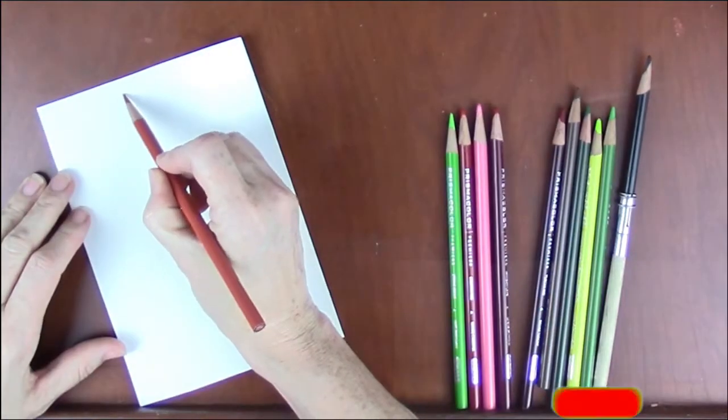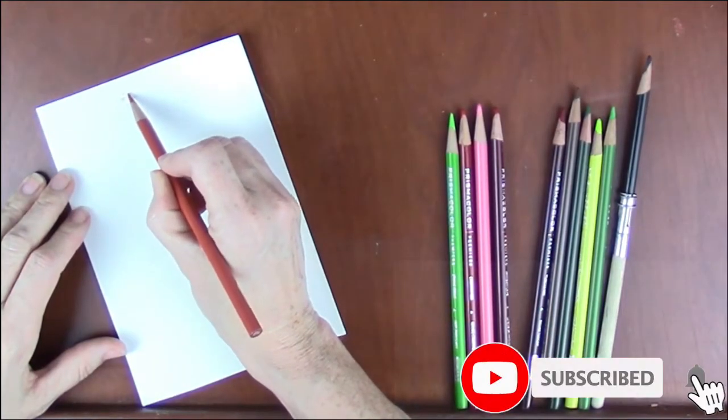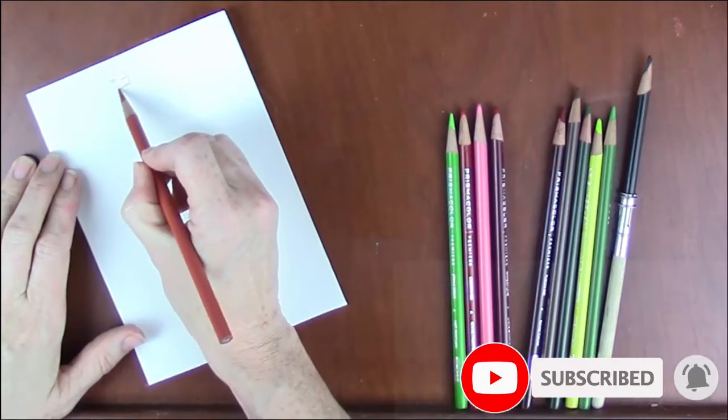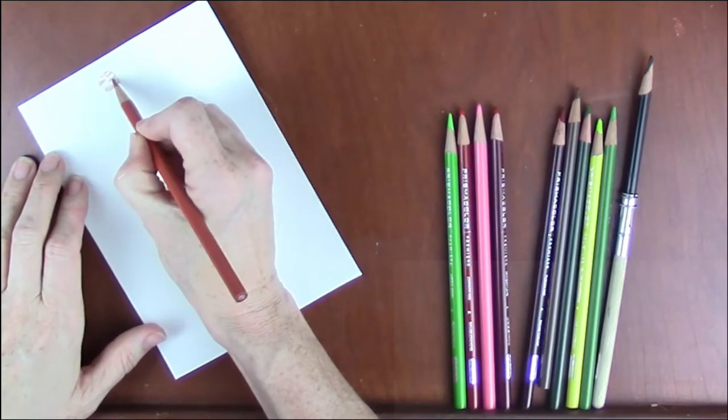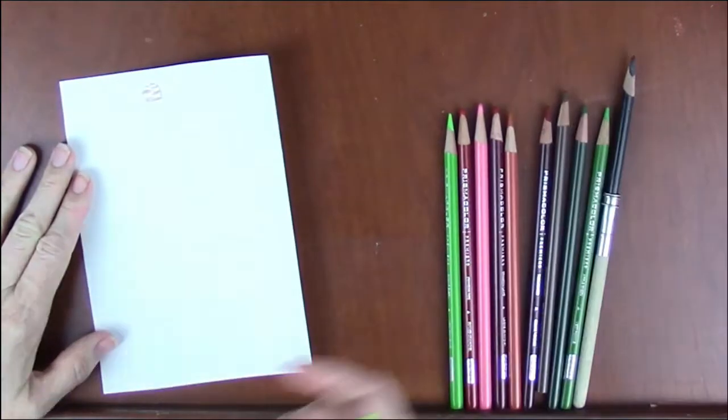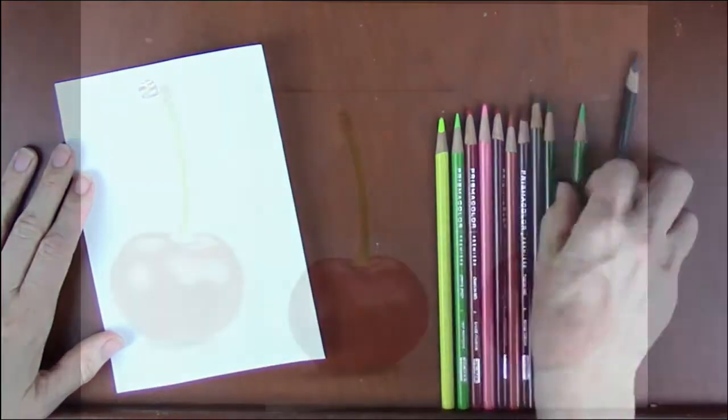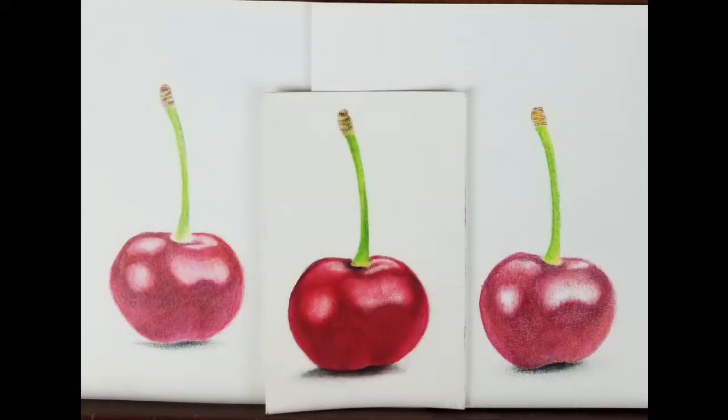As an example I'm going to draw a larger cherry and I'm going to be using some solvent with it, using Prismacolor Premier colored pencils which are wax based. Earlier I did three examples on three different types of paper and I'm going to be talking about which papers I used.